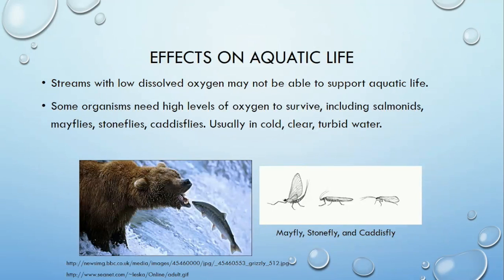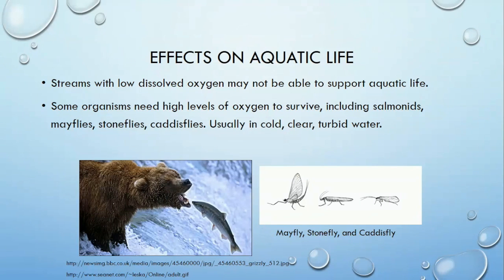How does dissolved oxygen — especially oxygen-poor conditions — affect aquatic life? If dissolved oxygen levels get too low, no organism can survive in that stream. Some organisms, such as salmon, trout, mayflies, stoneflies, and caddisflies, need oxygen-rich water.